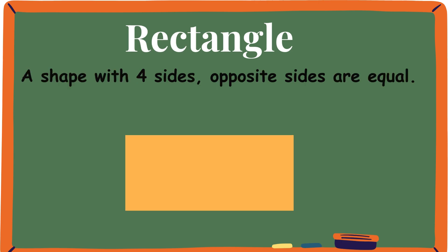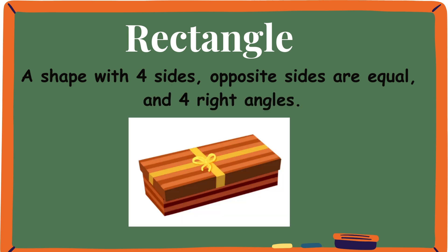Rectangle. A shape with four sides where the opposite shorter sides are equal, and so are the long sides. Look at this box — this box also has a rectangular face on its top.